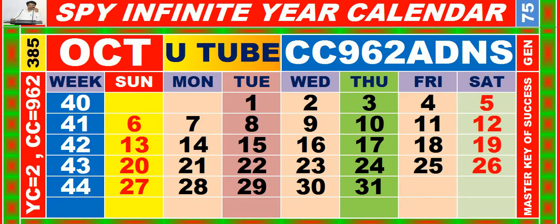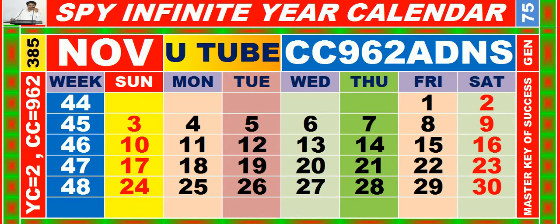Calendar for the month of October, having calendar code equal to 962. Calendar for the month of November, having calendar code equal to 962.